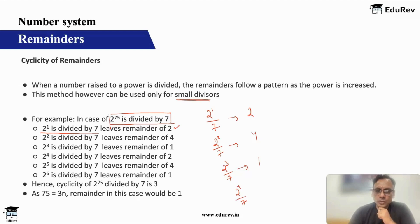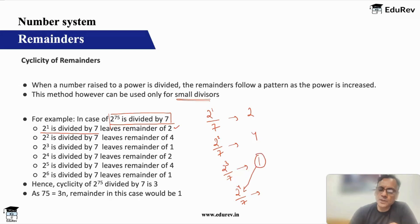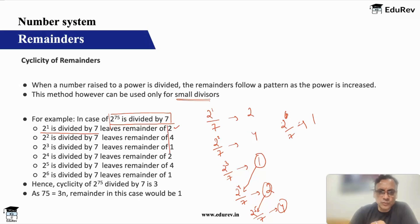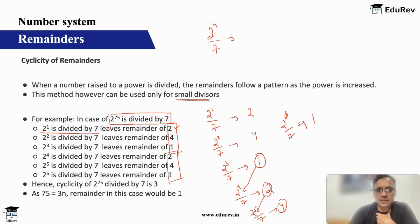For two to the power four divided by seven, you do not have to divide two to the power four. I told you earlier that the dividend can be replaced by the remainder. What was your remainder in the previous case? One. Just multiply that one with two — two divided by seven will again give you two. For two to the power five: the previous remainder was two, two into two is four, four divided by seven gives four. For two to the power six: four into two is eight, eight divided by seven is one. So you can see that two, four, one repeats.